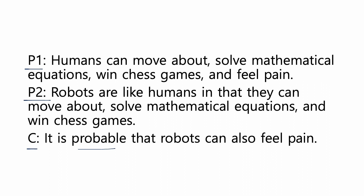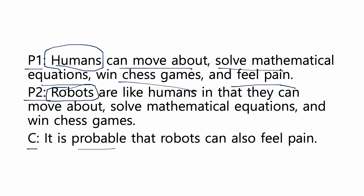Now, the two things being compared in this example are humans and robots. Humans have four properties: they can move about, solve math problems, win chess games, and feel pain. Robots are like humans in that they share the first three properties. What the argument asserts is that based on the analogy between humans and robots, we can probably conclude that robots can also feel pain. So here's the question: based on those similarities, can we reasonably conclude that robots can also feel pain?